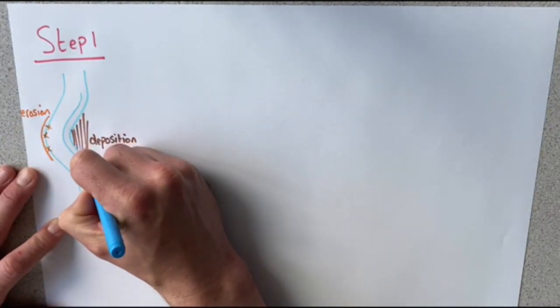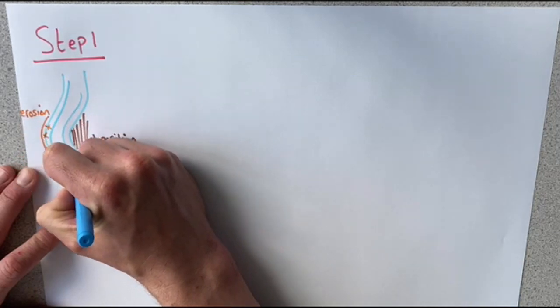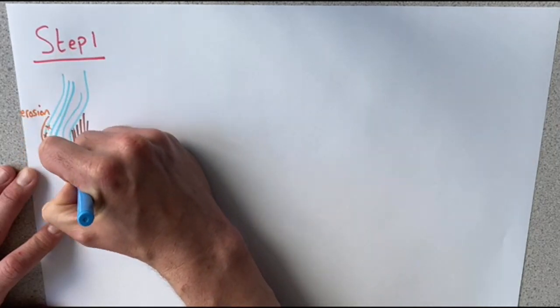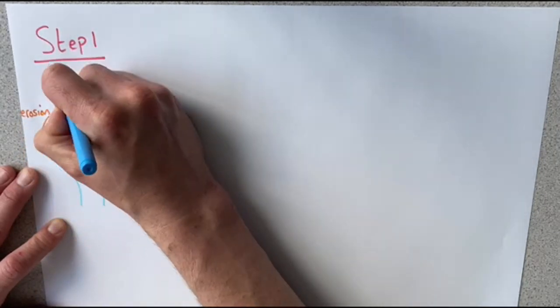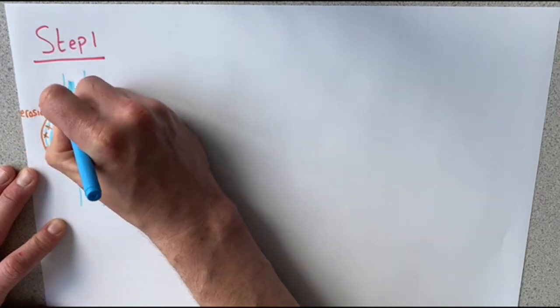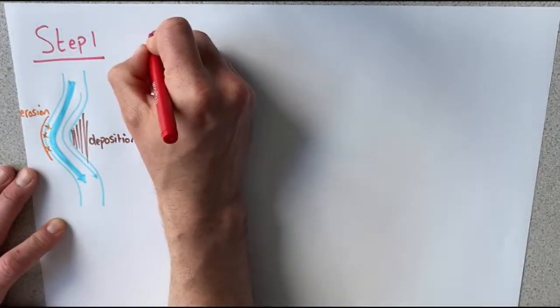On the inside bend of the river is a lot slower, has a slower velocity, so more deposition takes place here. On the outside bend the velocity is greater, so more erosion takes place on this bank.